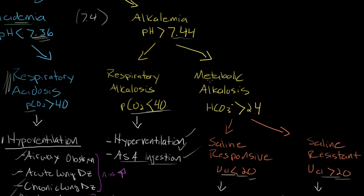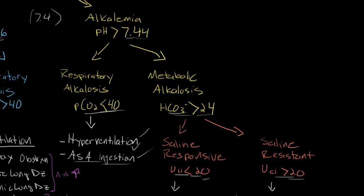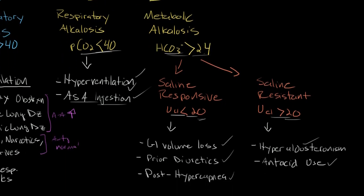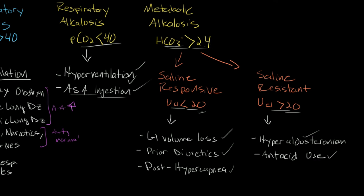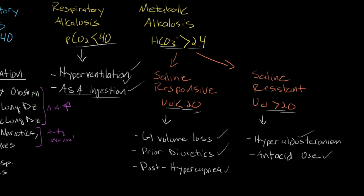On the other side, metabolic alkalosis corresponds to an elevated bicarbonate greater than 24. There are two kinds of causes, broken up into saline-responsive or saline-resistant. Saline-responsive usually implies volume loss — either diarrhea, diuretics like Lasix or HCTZ, or post-hypercapnia — and is diagnosed by a urine chloride less than 20. Giving this person normal saline or some kind of volume will resolve the metabolic alkalosis. The other type, saline-resistant metabolic alkalosis, is identified with a urine chloride greater than 20, and common causes include hyperaldosteronism and antacid ingestion.